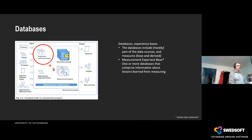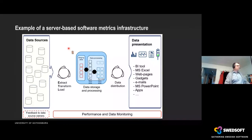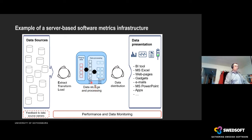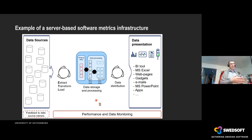Let's look at the measurement infrastructure. This is a typical generic setup: you have data sources to the far left and data presentation with different information product tools to the far right. In the middle is where the magic happens — where we store and process the information. In this area we check what has been received; if something is wrong or missing, we can inform the owners of the data sources. We also monitor the performance of the data flow and data integrity.